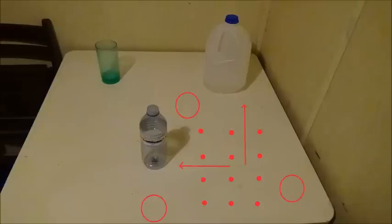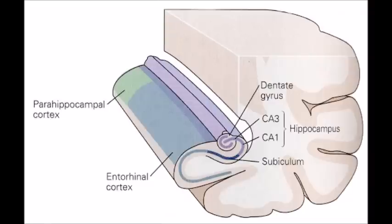So, we have place cells in the hippocampus that represent specific areas in real space. We have grid cells in the entorhinal cortex that represent a kind of metric layout of the environment. And we have head direction cells in the subiculum that provide information about which direction we are headed. All three of these spatial neuron types are located in the same general region of the brain. Information about the outside world enters the brain through our senses, gets processed by several regions in the cortex, before ultimately ending up here in this area. How each of these individual components combine into a unified spatial representation is still an active area of neuroscientific study.